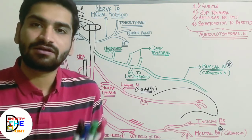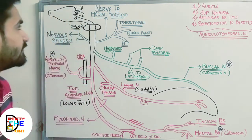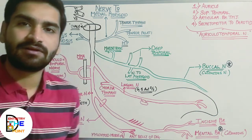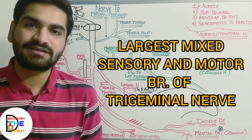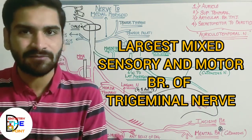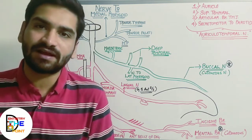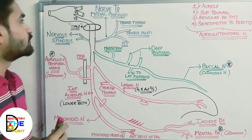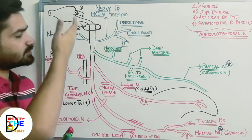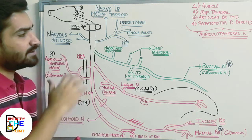I will also make videos on the other two divisions of the trigeminal nerve, that is the ophthalmic and maxillary divisions. Starting with the mandibular nerve: the mandibular nerve is the largest mixed branch of the trigeminal nerve. It is the third division of the trigeminal nerve. We'll start from its course, then discuss its three main divisions, their branches, and which anatomical parts those branches supply.